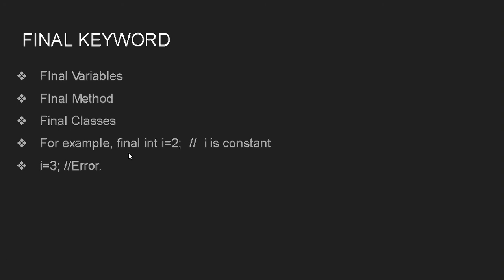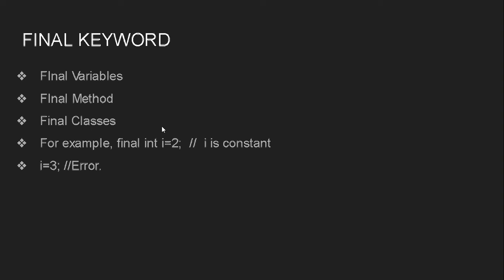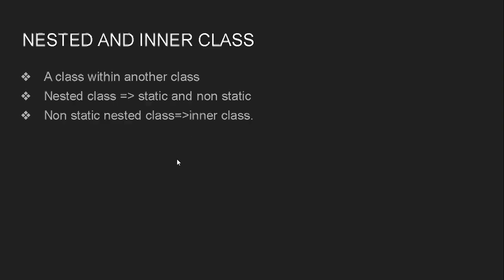For example, the familiar syntax 'int i = 2' — if you want to make 'i' a final variable, you simply write 'final' in front of 'int', giving you 'final int i = 2'. Once declared as final, 'i' becomes a constant. If you try to change its value — for example writing 'i = 3' — the compiler will give an error because a final variable's value cannot be changed after assignment.